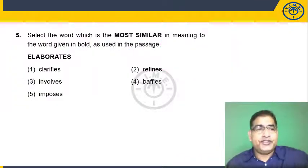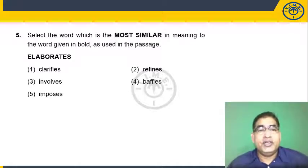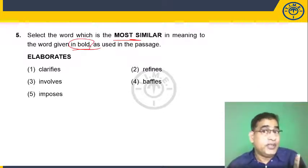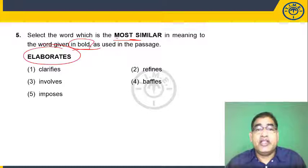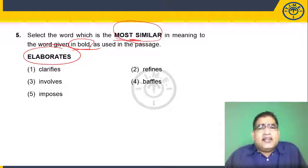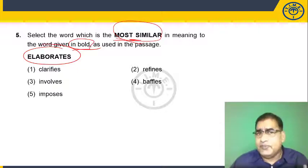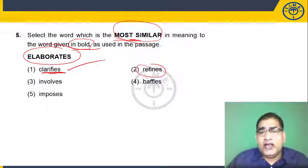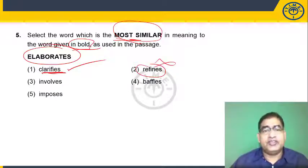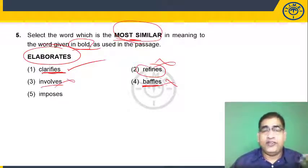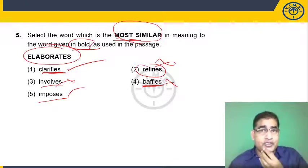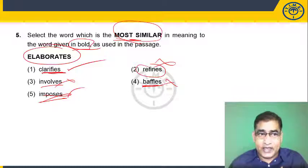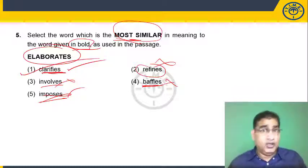Question 5 asks for the word most similar in meaning to 'elaborates,' which was printed in bold. Elaborates means to explain or clarify. Option 1 is 'clarifies' — perfect. 'Refines' means to purify, 'baffle' means to confuse (opposite of elaborate), 'involve' is general, 'impose' is unrelated. The correct answer to question 5 is 1.